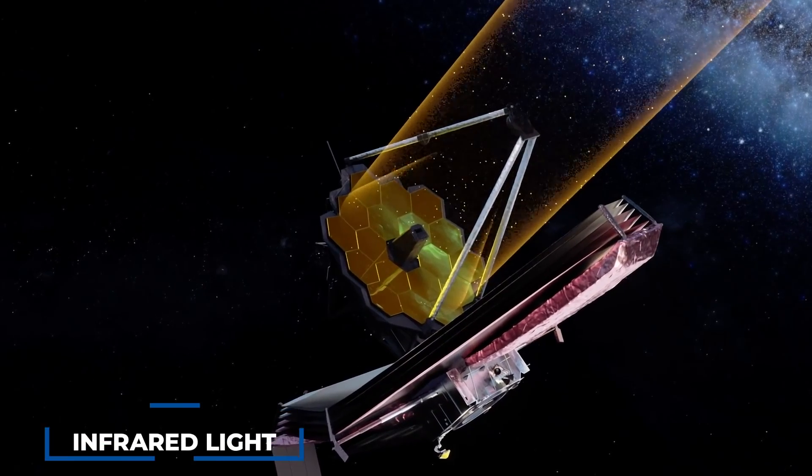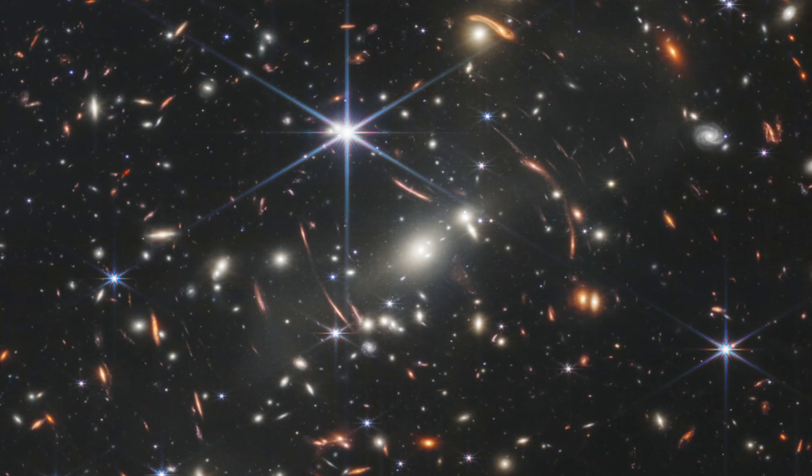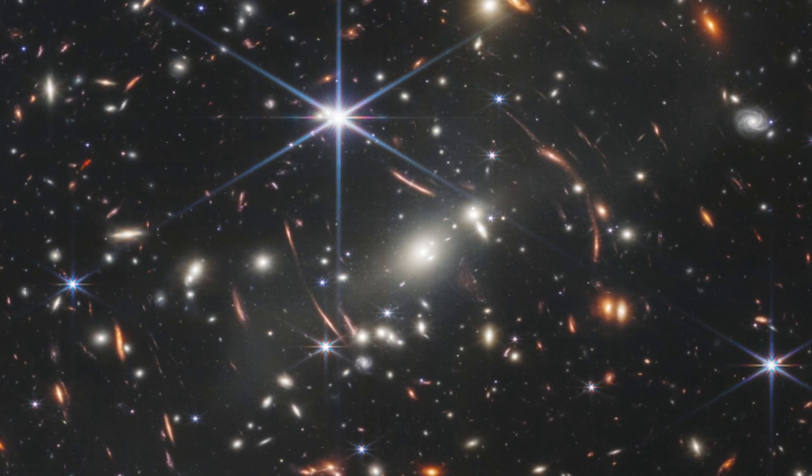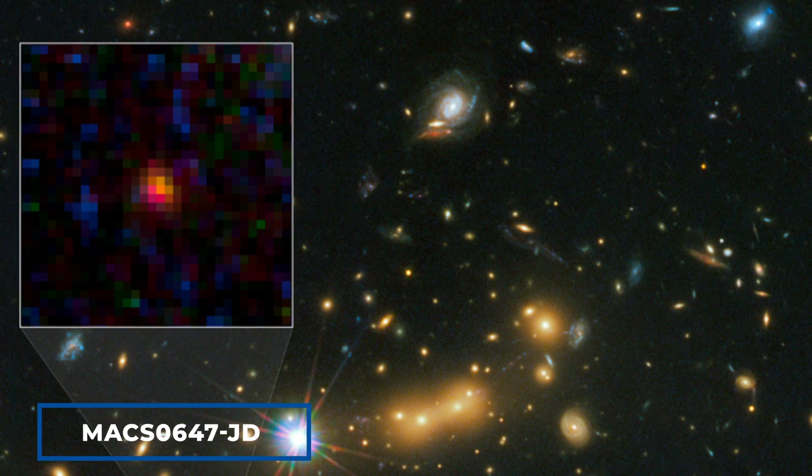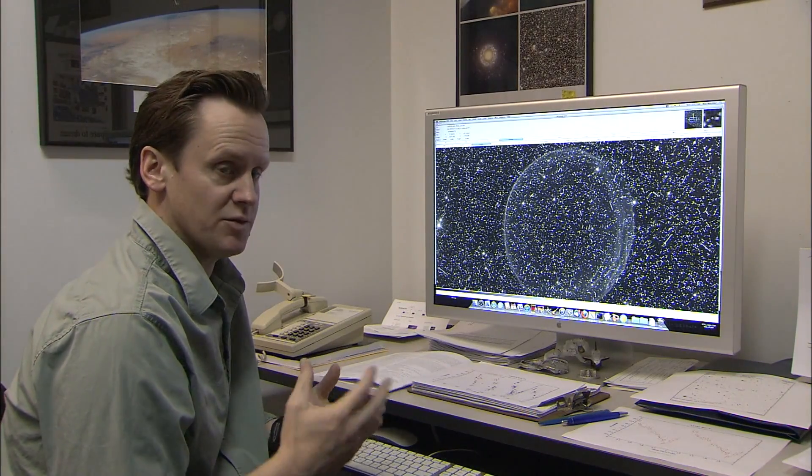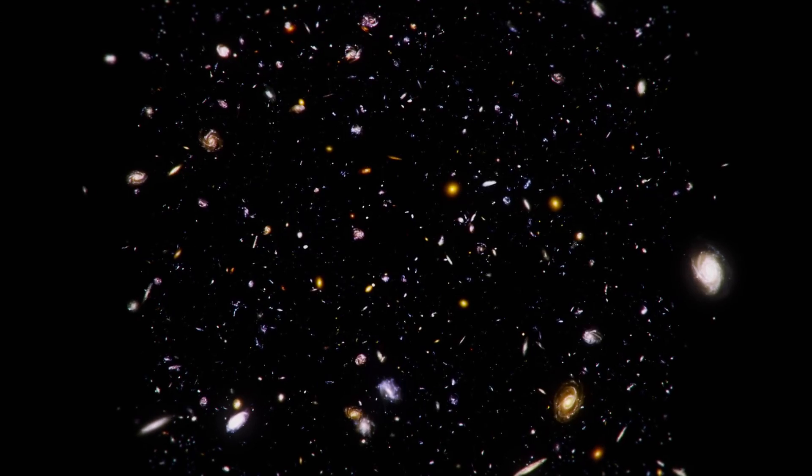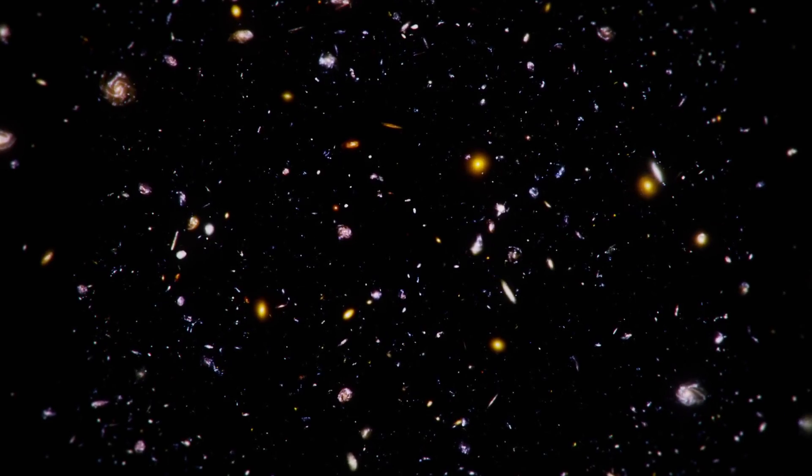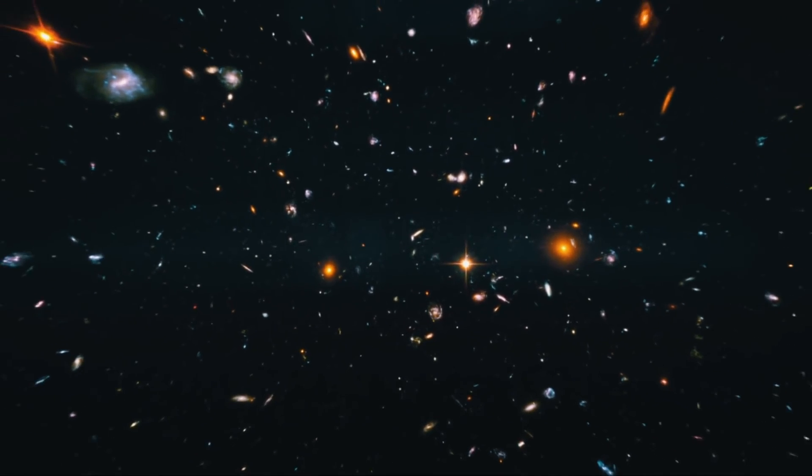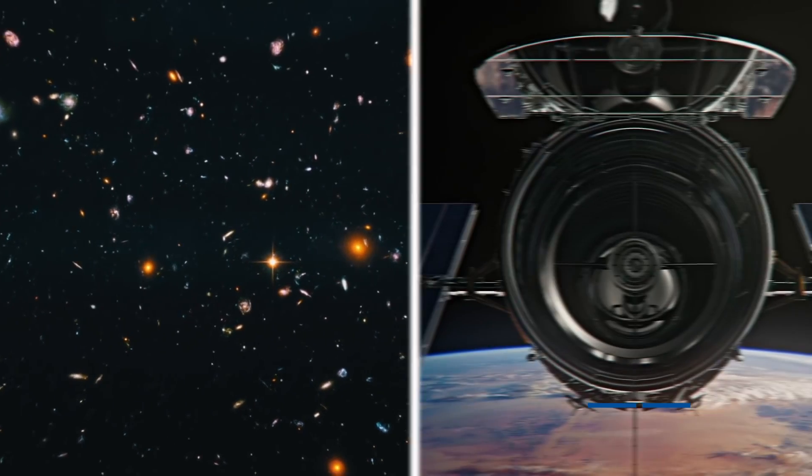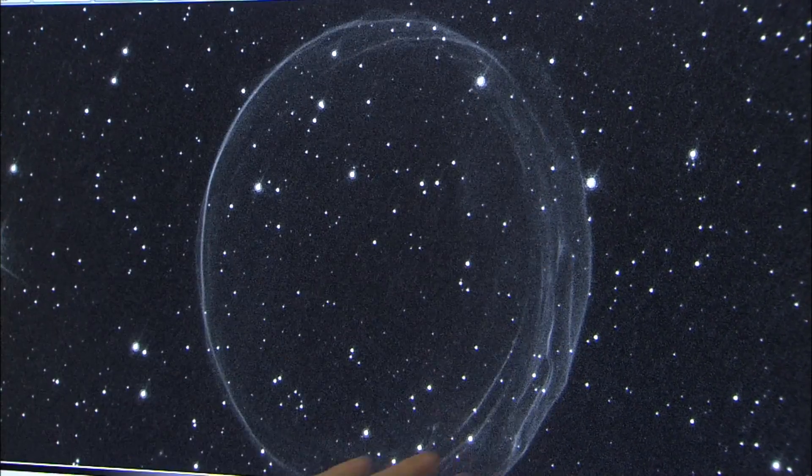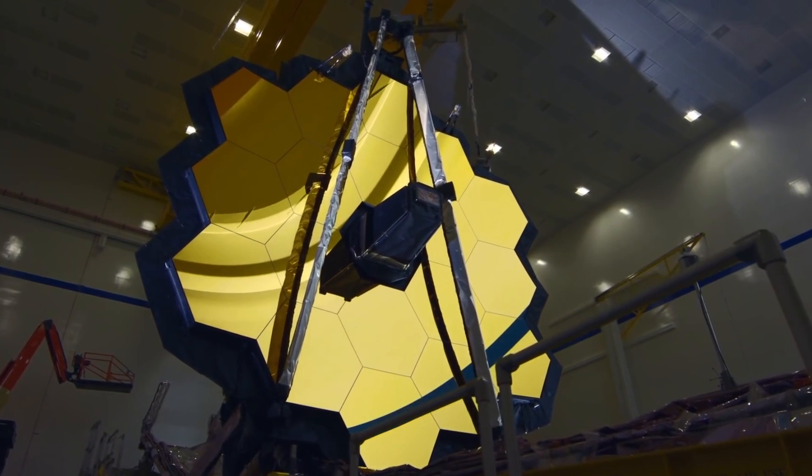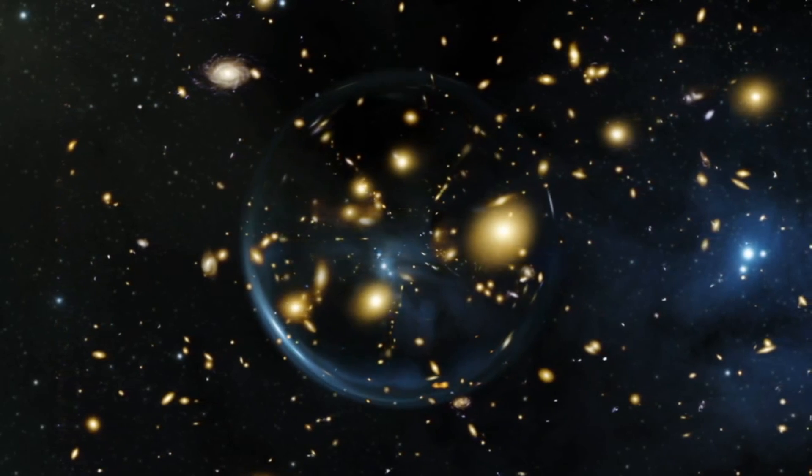Now, thanks to its ability to detect infrared light, the JWST has given us an image of a galaxy cluster and a distant galaxy called Max 0647JD that has thrilled scientists around the world. The cluster appears as a dazzling grouping of galaxies that sparkle like gems against the backdrop of space. The distant galaxy, which was originally discovered a decade ago using the Hubble Space Telescope, is now being studied in much greater detail thanks to the JWST's triple lensing effect, caused by the phenomenon of gravitational lensing.